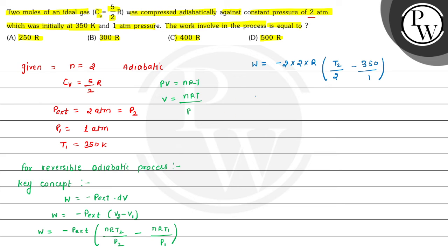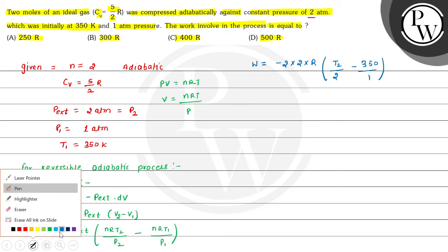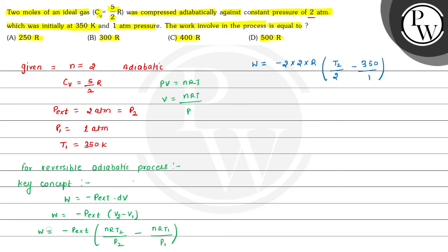Now for the adiabatic process, work is also given by W equals n·CV·ΔT. So W equals n times CV times (T2 minus T1), which is 2 multiplied by 5/2 R multiplied by (T2 minus 350). This gives W equals 5R times (T2 minus 350). This is equation 2.